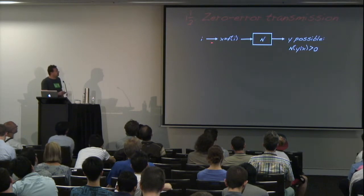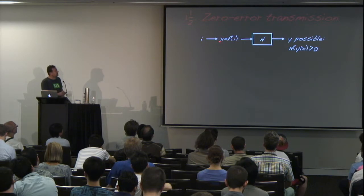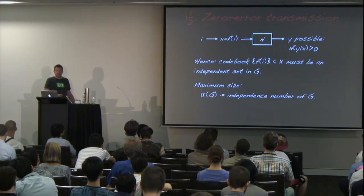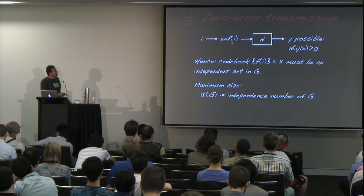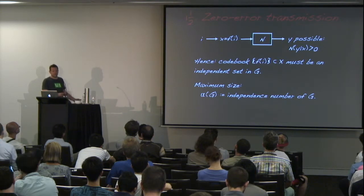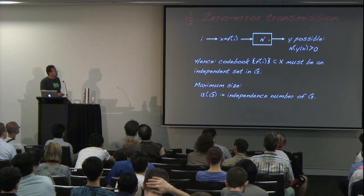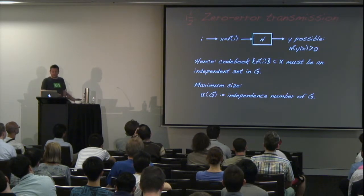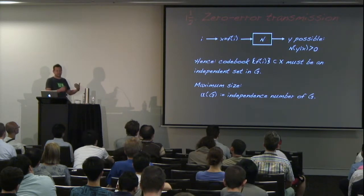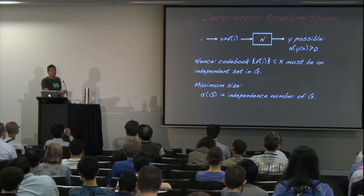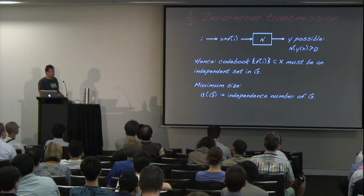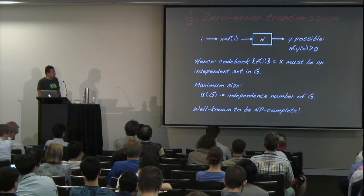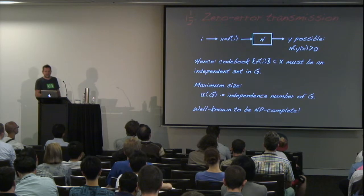For the zero-error problem, Alice applies an encoding function, sends through the channel, and Bob gets some output. For Bob to be certain about the message, different codewords must not be confusable — they must form an independent set in the confusability graph G. We want to maximize the codebook size, which is the independence number of G, denoted alpha(G). This is one of the classic NP-complete problems — even approximating it is NP-hard.